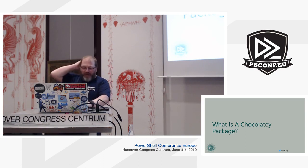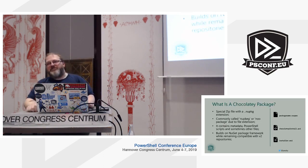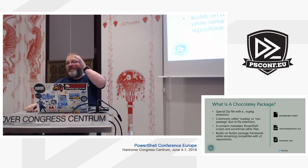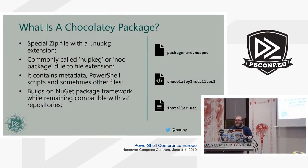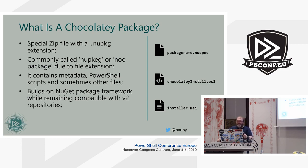So what is a Chocolatey package? A Chocolatey package is effectively just a zip file — a fancy zip file, nothing more than that. You can open it with 7-Zip, WinZip, or any zip manager. It contains some special folders. We commonly call it a nupkg — or "new package" — and that's based on the file extension N-U-P-K-G. It contains metadata, PowerShell scripts, and sometimes other files.